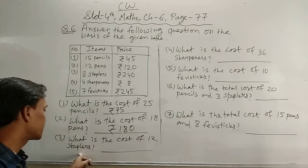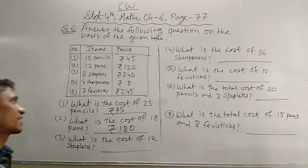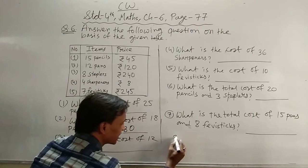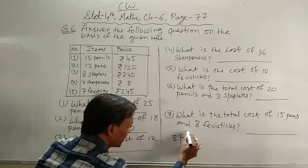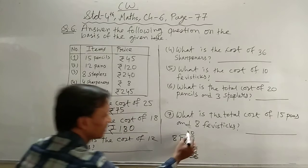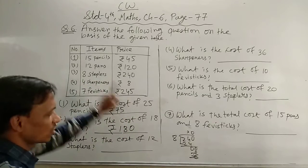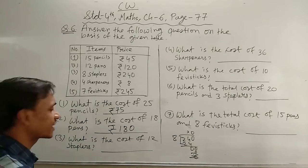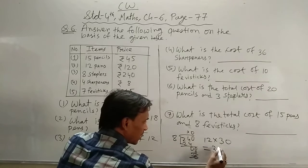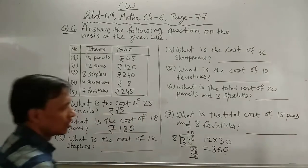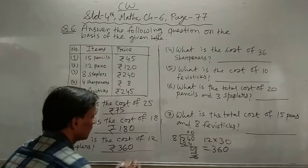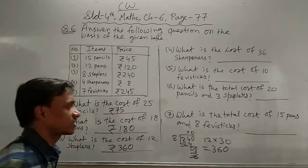What is the cost of 12 staplers? एक stapler की cost find करो। 8 staplers का cost 240 rupees, तो 240 को 8 से divide करो: 8 threes are 24, minus 24 = 0, 8 zeros are 0, answer 30. एक stapler की cost 30 rupees। तो 12 staplers की cost: 12 into 30 = 360 rupees।